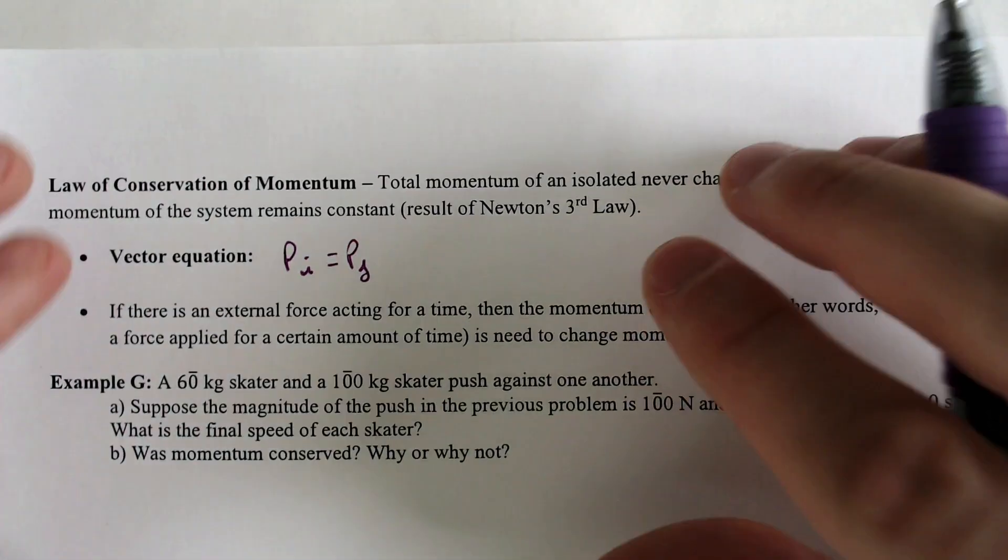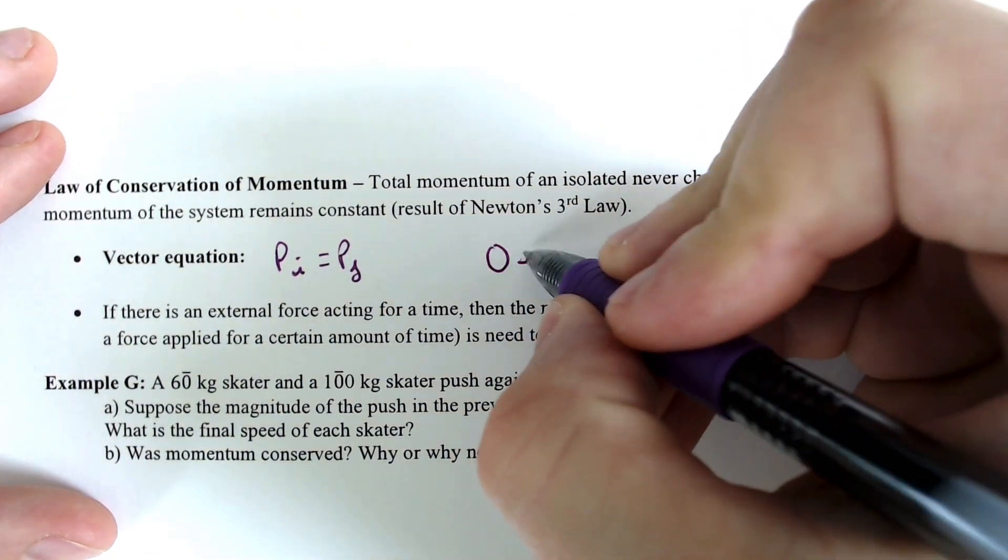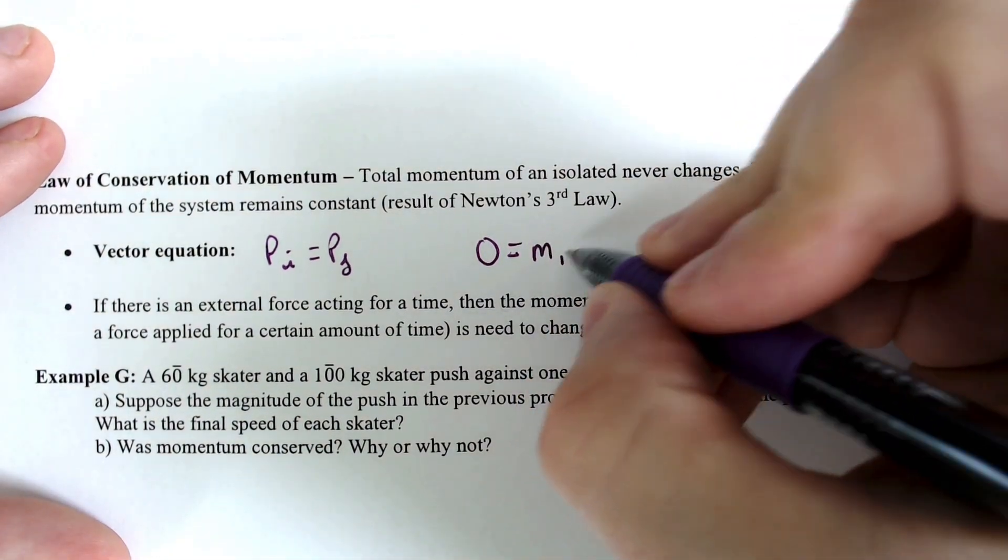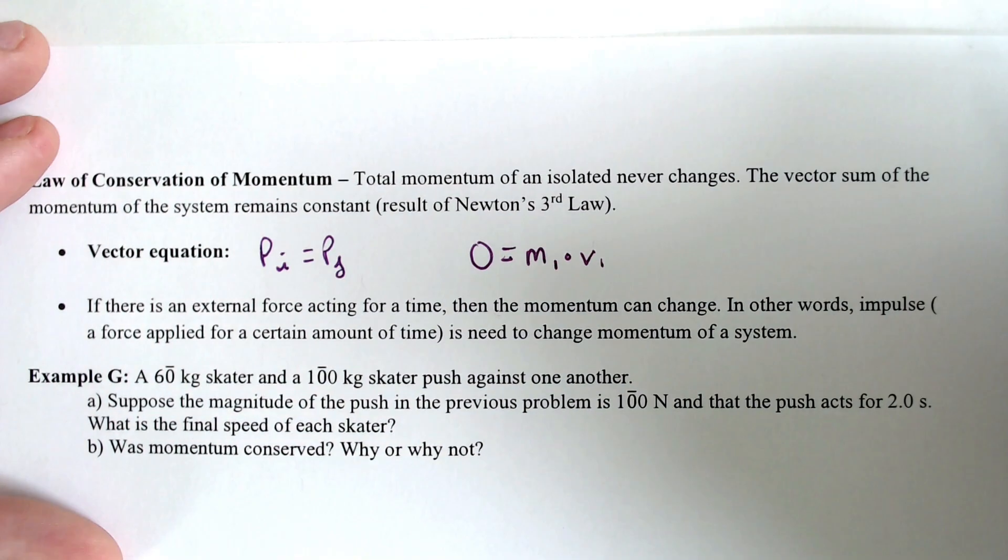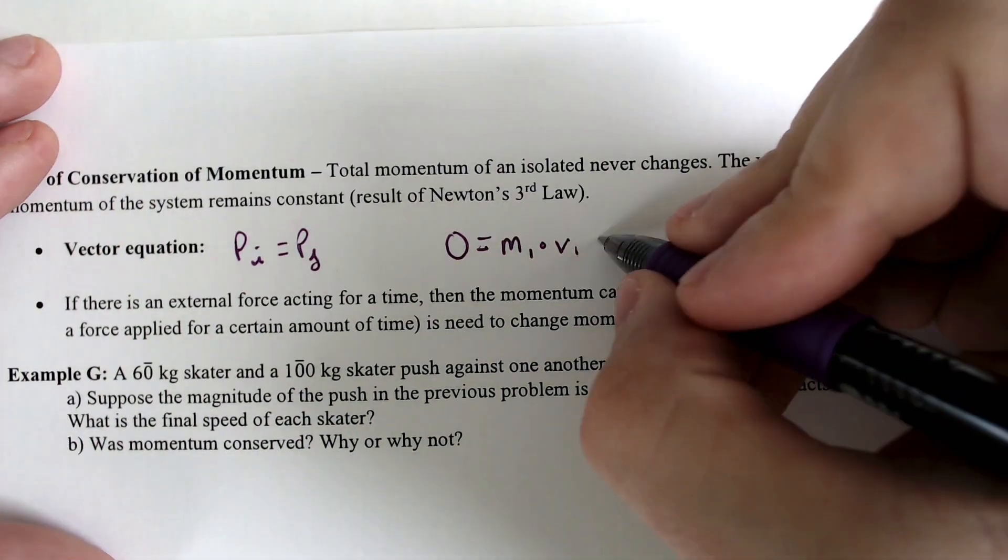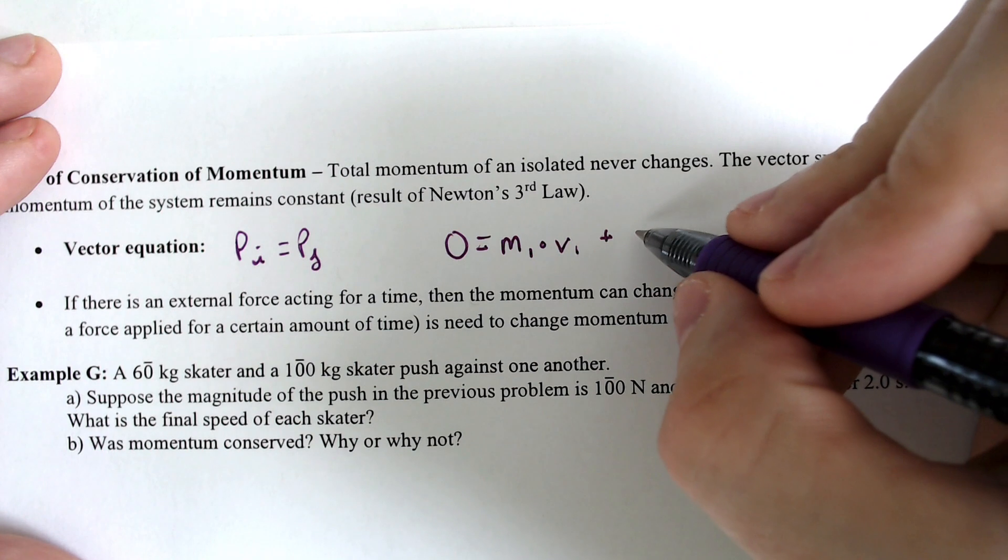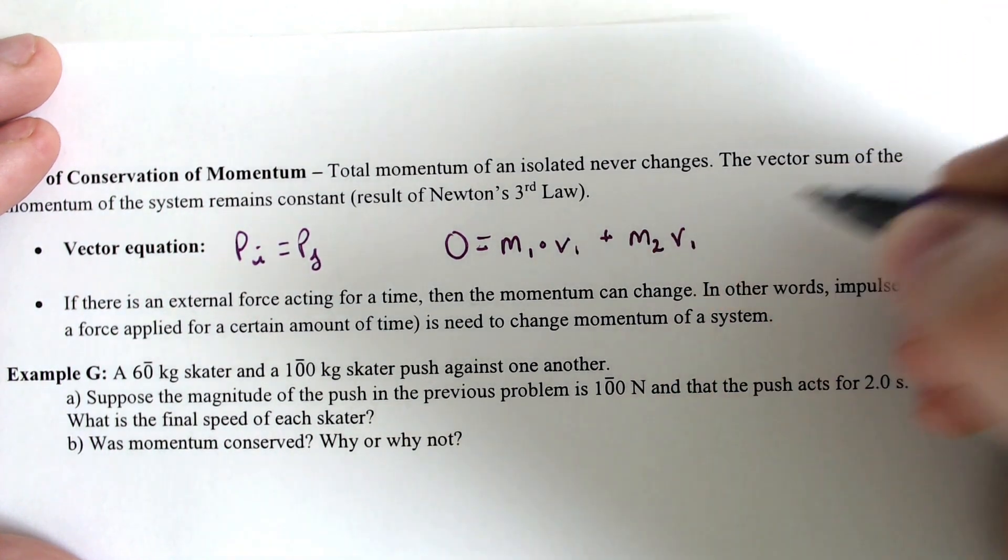and one that I feel like is even more useful, is that the net momentum of the mass of one times the velocity of block one, or ball one, added with the mass of ball two with the velocity of ball two,